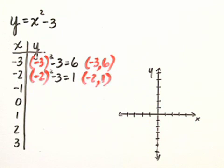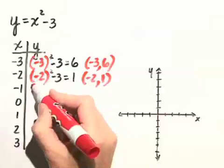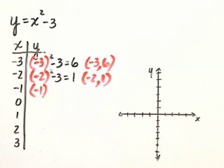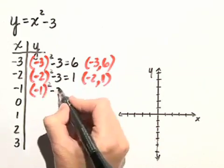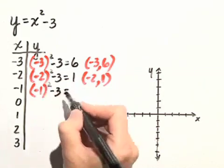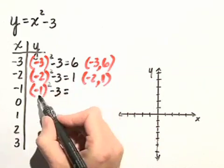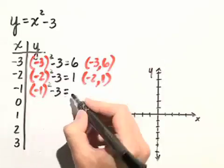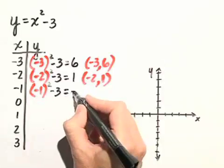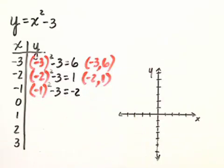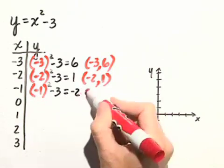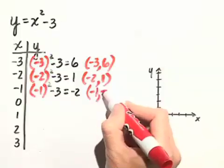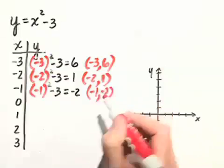Next, we'll substitute negative 1 in for x. Negative 1 squared minus 3 gives us: negative 1 squared is just 1, minus 3 gives us negative 2. So our next point will be represented by negative 1, negative 2.